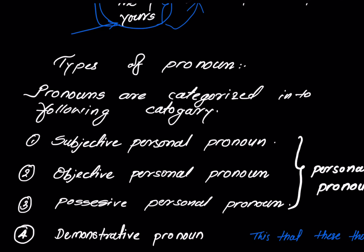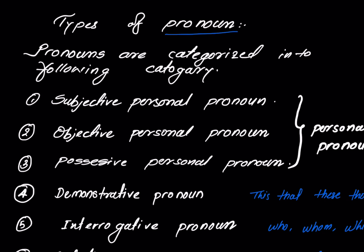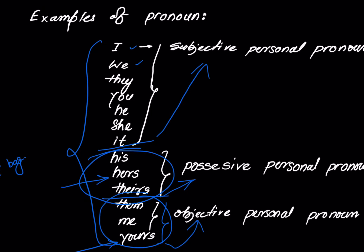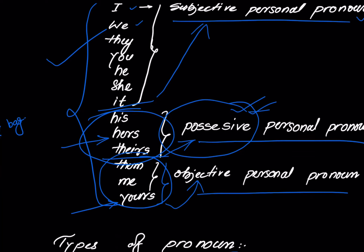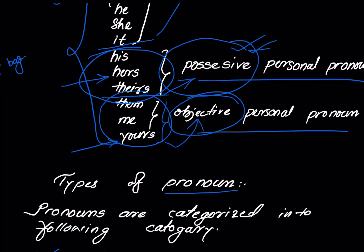Now how do we find out how many pronouns there are? We divide them into categories. The categories we have here are: subjective personal pronoun, objective personal pronoun, and possessive personal pronoun. If you want, you can define all three under one umbrella — personal pronoun. Their examples are already shown here. Subjective is used as a subject; possessive shows ownership — if something belongs to somebody; and objective is used as an object.